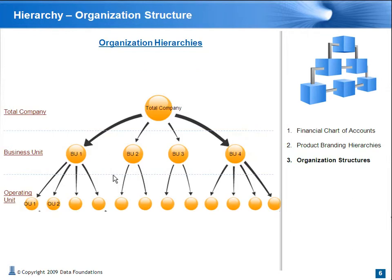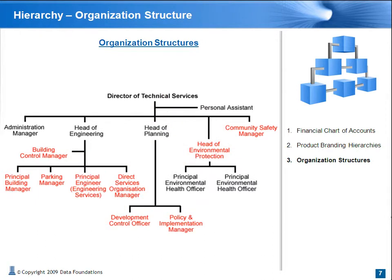Here are two flavors of organizational hierarchies. The first is similar to the product branding hierarchy with total company, business unit, and operating unit, depicted as three levels. The second flavor of an organization structure is more from a perspective of resource allocation. Looking more closely at an organization chart, the number of levels between the director and administrative manager and between the director and policy implementation manager are not the same. Organization hierarchies are ragged, but not as deep as chart of accounts.